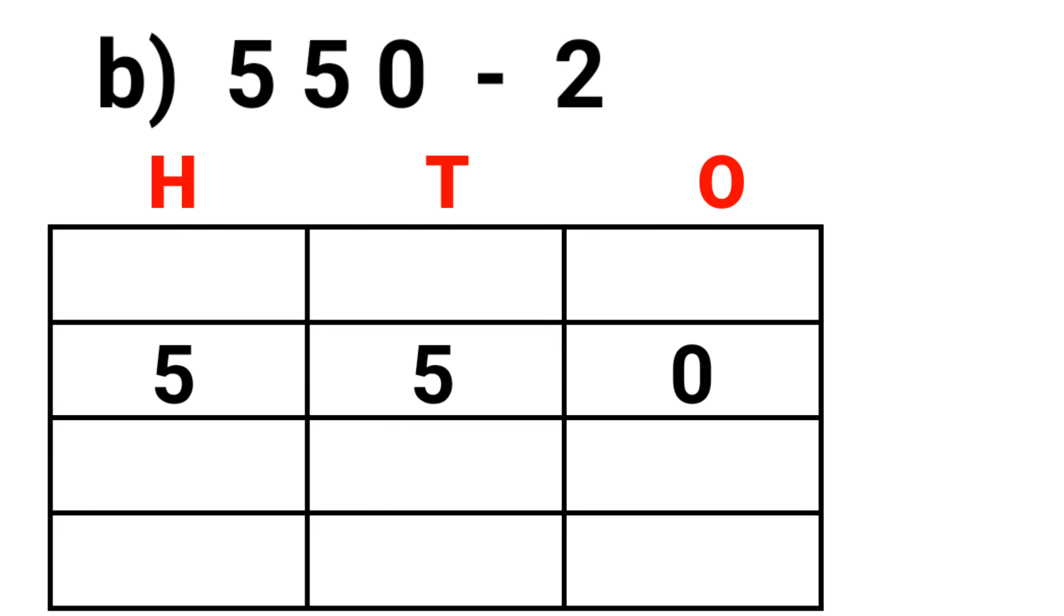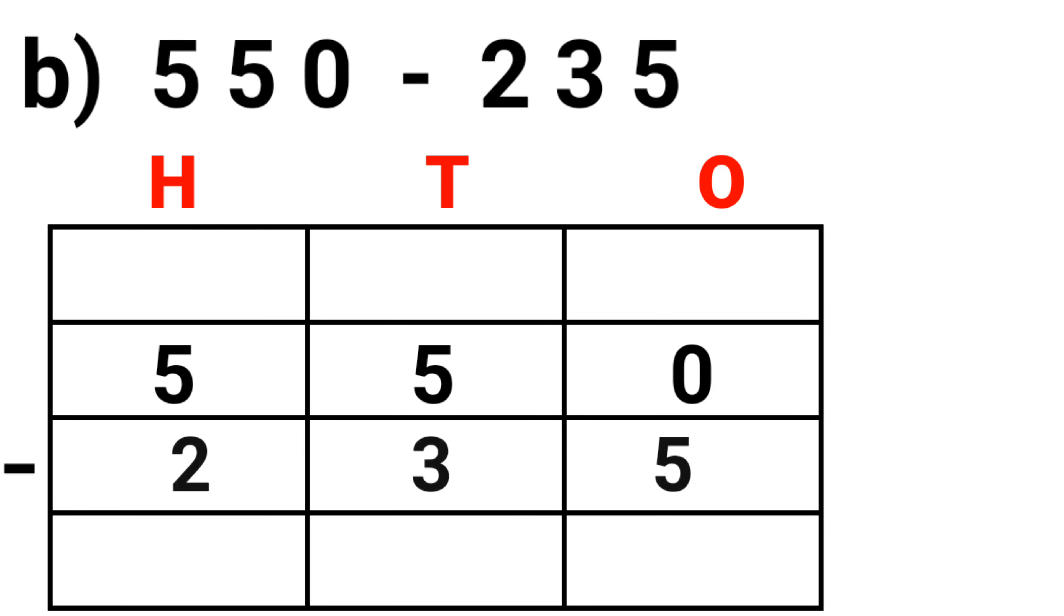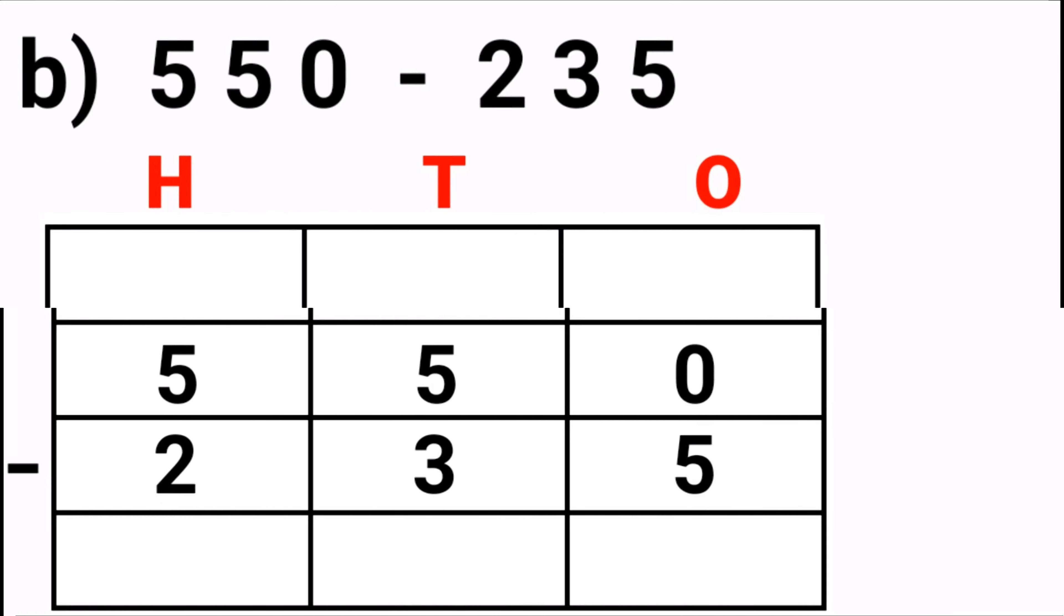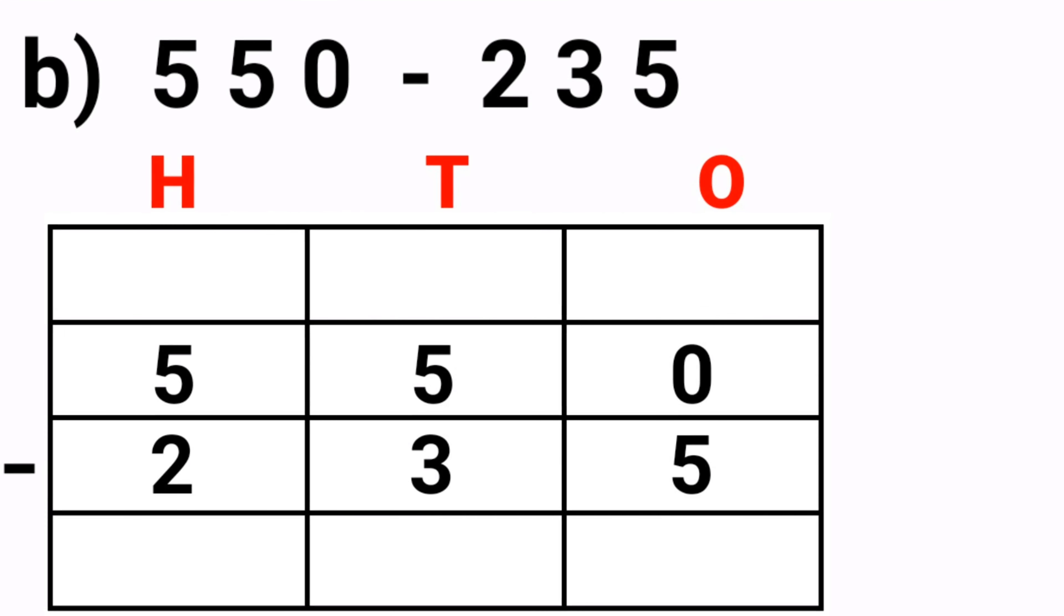550 minus 235. Let us see ones place: 0 minus 5. We cannot subtract 5 from 0, so we will borrow 1 from the tens place. 5 becomes 4, and 0 will become 10. So 10 minus 5.